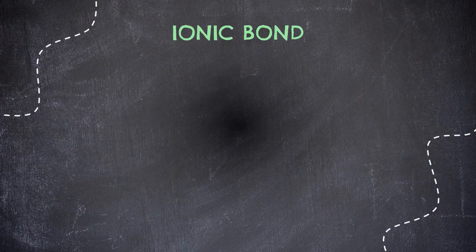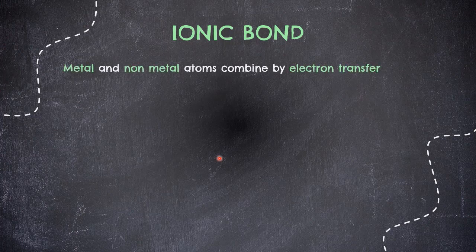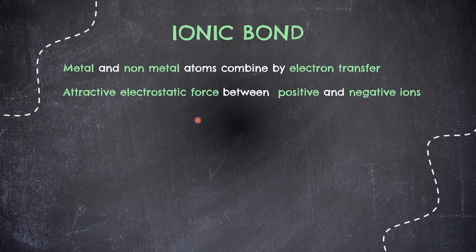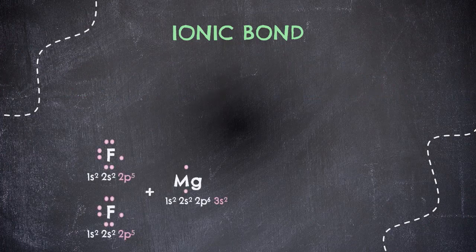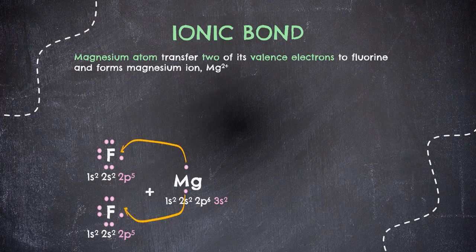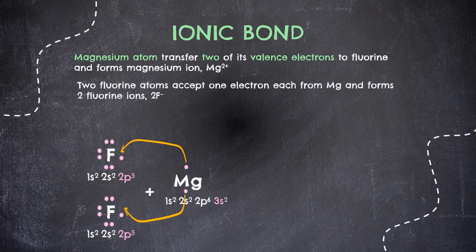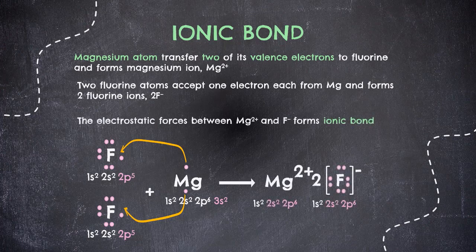Now we will go through the types of bonds to be formed. First is ionic bond — a type of bond that holds metal and non-metal atoms via electrostatic attractions, where each has an opposite electrical charge as positive and negative ions. To get this charge, they must transfer electrons by losing or gaining. Using the previous example of magnesium and fluorine: magnesium transfers two of its valence electrons and forms Mg²⁺, while the two fluorine atoms accept one electron each and form 2F⁻. Since we have opposite charges, the attractive electrostatic forces between Mg²⁺ and F⁻ form an ionic bond.